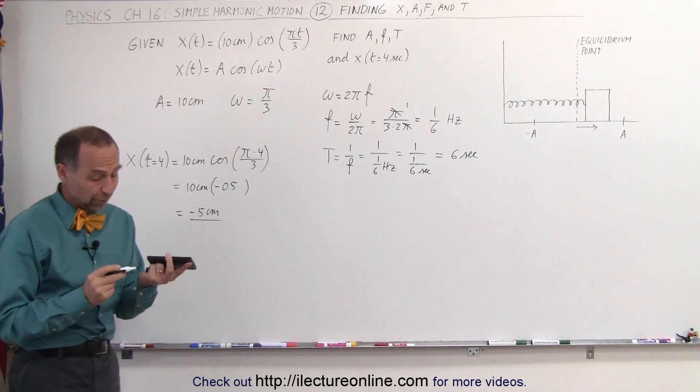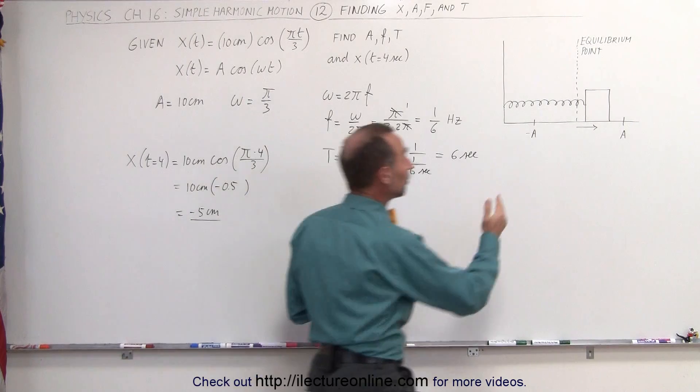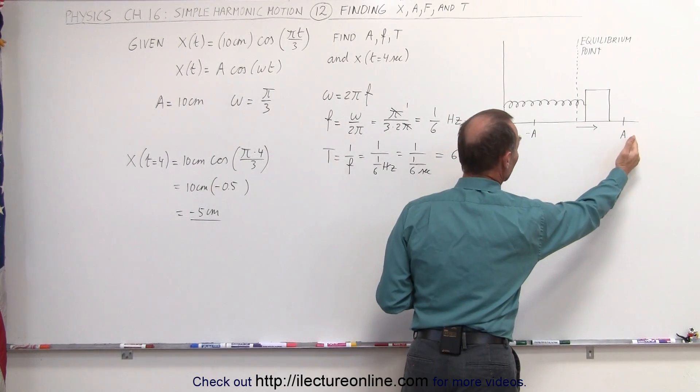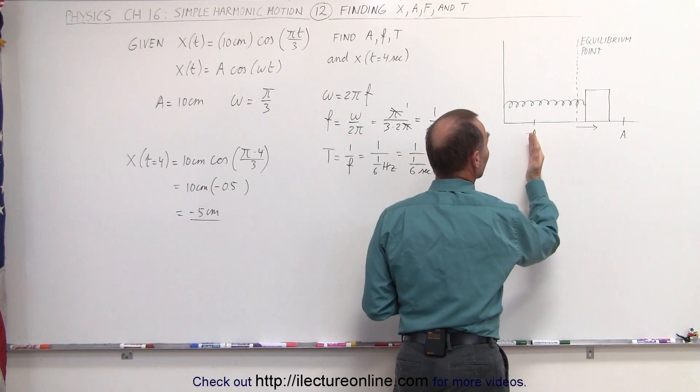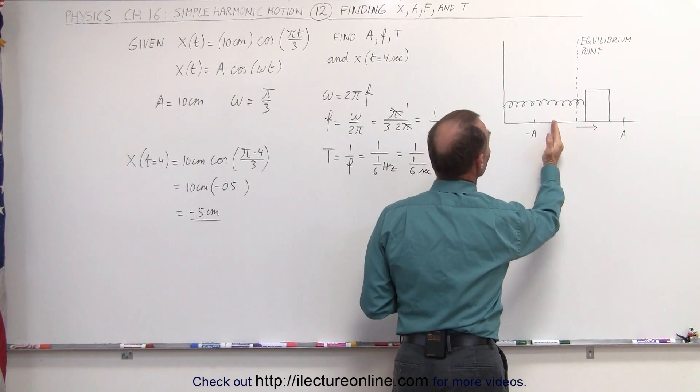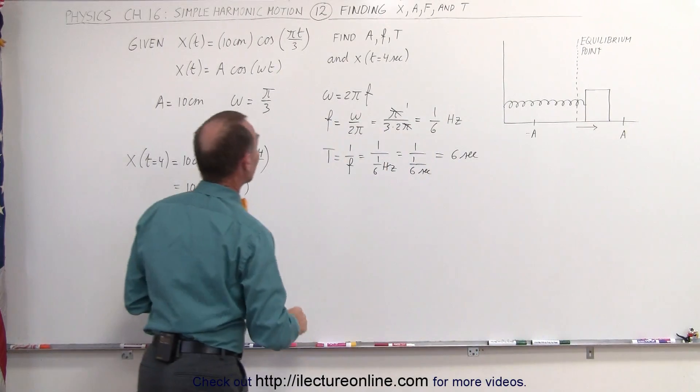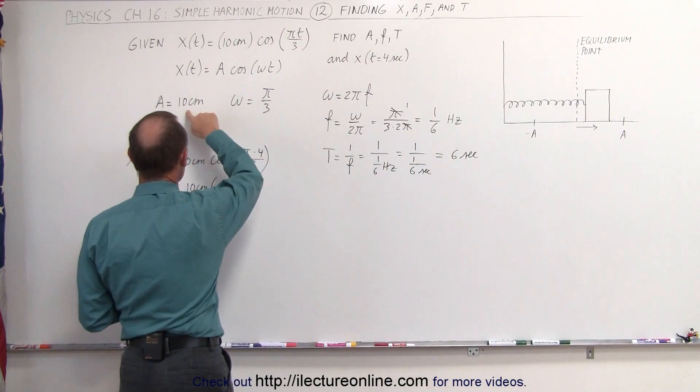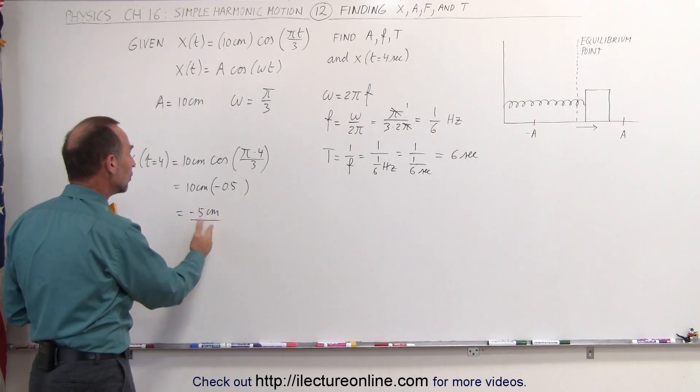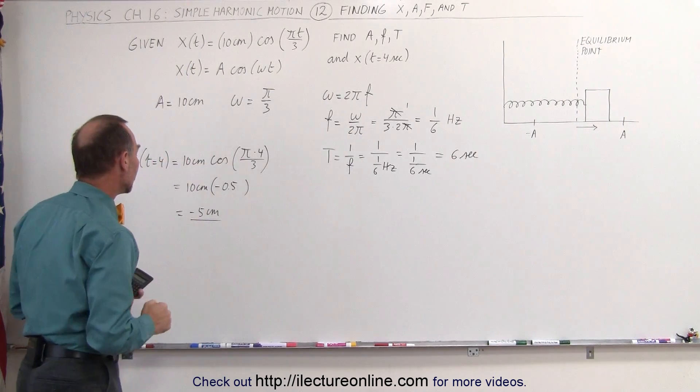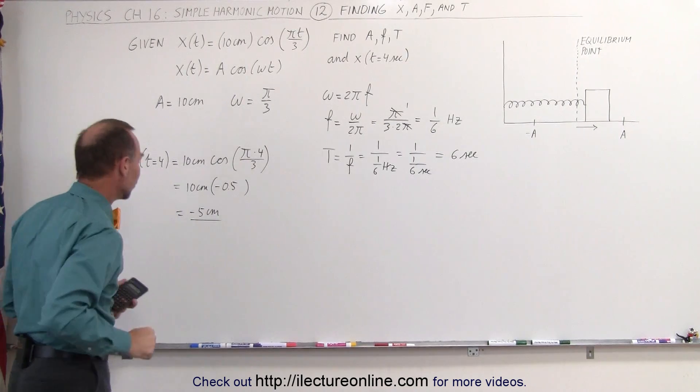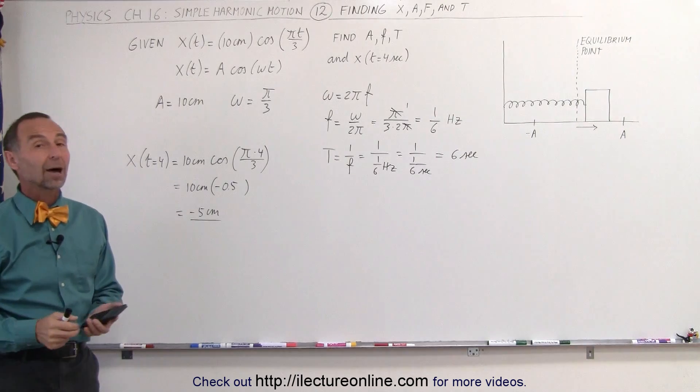What about the minus? Well, it turns out that the object will be moving back and forth across the equilibrium point from maximum amplitude on one side being positive to amplitude on the other side being negative. So it could easily be minus 5 centimeters instead of plus 5 centimeters. If the total amplitude is 10 centimeters, that would be halfway between the equilibrium point and the amplitude on the negative side of the equilibrium point. So minus 5 centimeters is the position when time is equal to 4 seconds. And that's how we do that.